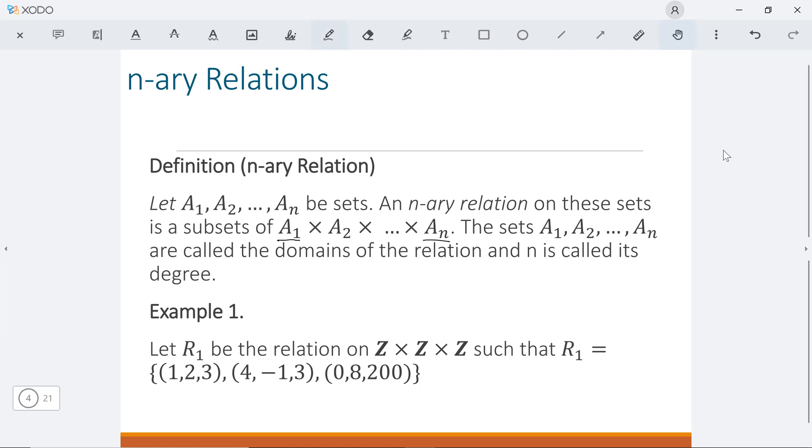For each of them, the first element is from our first Z, the second element from our second Z, the third element is from our third Z. So you can see this is our A₁, A₂, and A₃.